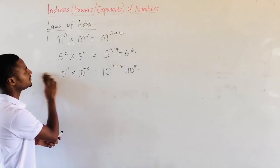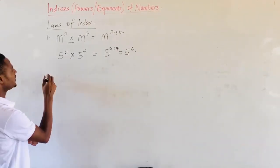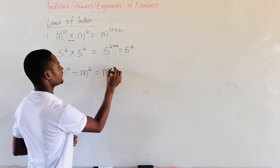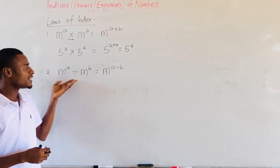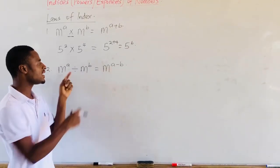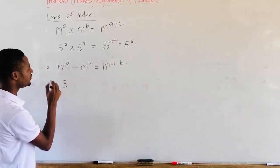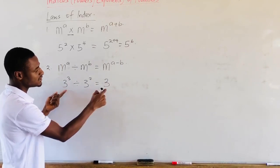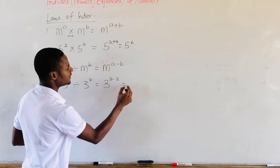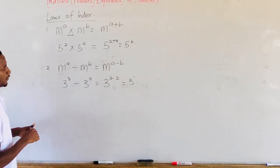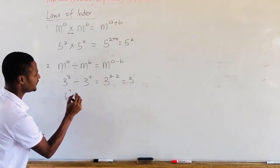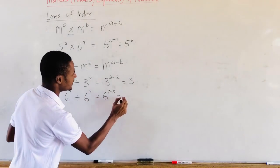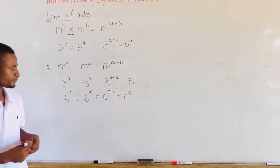Law number 2 states that when we are dividing numbers that have the same base, we maintain the base and then subtract the exponents. So, if we have 3 raised to the power 3 divided by 3 raised to the power 2, we maintain the base 3 and subtract the exponents to get 3 raised to the power 1. We could also have 6 raised to the power 7 divided by 6 raised to the power 5, which gives us 6 raised to the power 2.